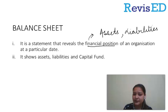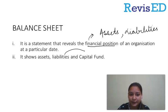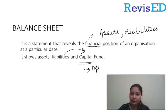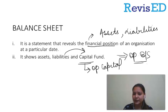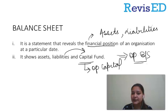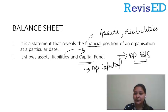We will be making fixed assets and current assets on the assets side, and bank overdrafts and other liabilities on the liabilities side. On the liabilities side we will write capital fund. Capital fund is our opening capital fund, and it would be recorded in our closing balance sheet.